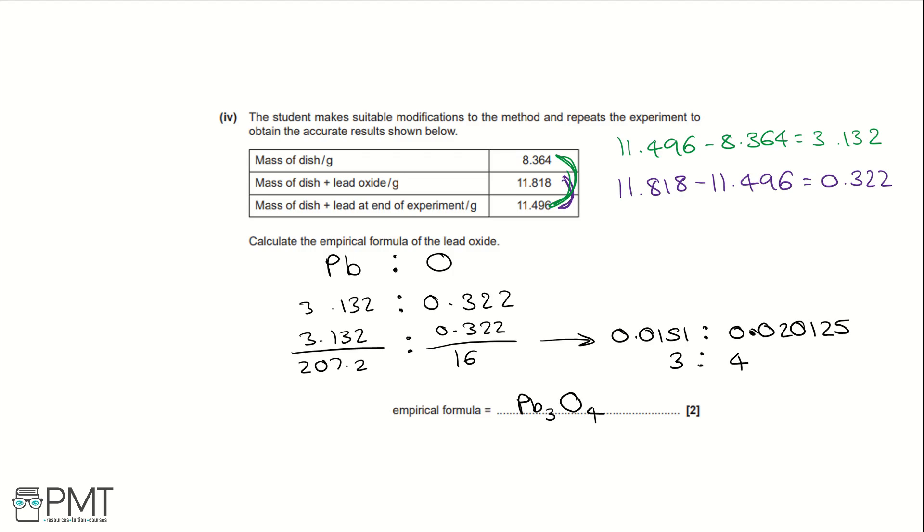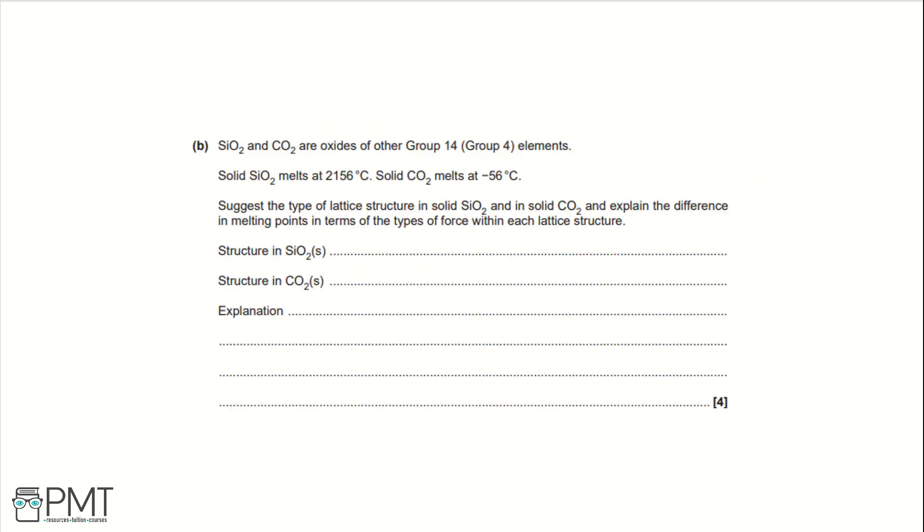And that means that the empirical formula of our oxide is Pb3O4. You get the two marks for this question. One for working out the ratio, and the second mark for working out the empirical formula correctly. Those two things get you the two marks for this question. Part B.